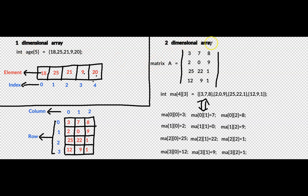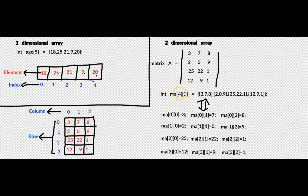Let's see the two-dimensional array. For example, you have matrix A equal to: 3, 7, 8, 20, 9, 25, 22, 1, 12, 9, 1. You can store the values of matrix A in a two-dimensional array. In this representation, A[4][3] — because it has four rows (1, 2, 3, 4) and three columns (1, 2, 3). That's why we declare the two-dimensional array with row size 4 and column size 3.